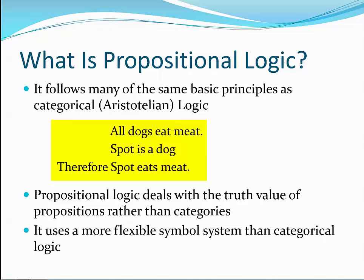For instance, all dogs eat meat, Spot is a dog, therefore Spot eats meat. In categorical logic, each claim relates a subject term, such as dog, to a predicate term, such as eats meat. We can make inferences from the two premises of a syllogism to its conclusion.